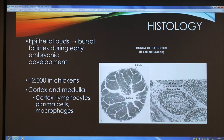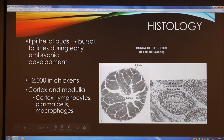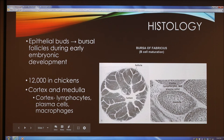Moving into the histology, or study of the tissue of the bursa of Fabricius, these epithelial buds become bursal follicles during early embryonic development. While the embryo develops in the egg, the epithelial buds become follicles — small sacs on the bursa. These follicles are numerous; there are approximately 12,000 follicles in the bursa of a chicken. Each follicle has a cortex and a medulla. The cortex is the outer layer surrounding the inner layer called the medulla. The cortex houses many white blood cells such as lymphocytes, plasma cells, and macrophages. The microscopic views on the right of this slide show a follicle and a zoomed-in image of the cortex and medulla.